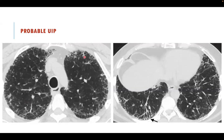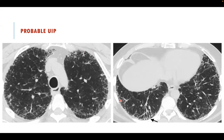Moving to probable UIP: everything mentioned for typical UIP features is present except one — absence of honeycombing. You will see irregular reticulation in a peripheral location and traction bronchiolectases and bronchiectases, but lacking honeycombing. Additionally, no bronchocentricity — the bronchi are normal within the bronchovascular bundles. Only irregular reticulation along the periphery or subpleural location with traction bronchiectases and bronchiolectases, no bronchocentricity.